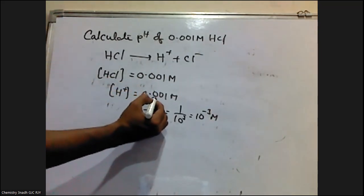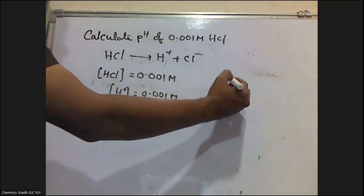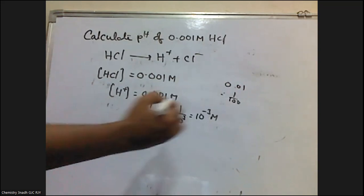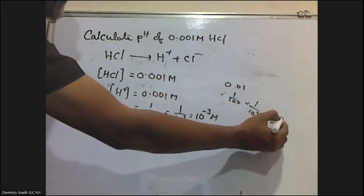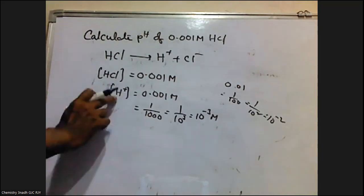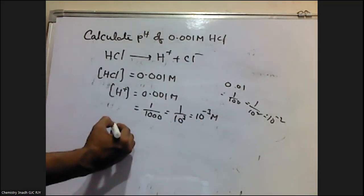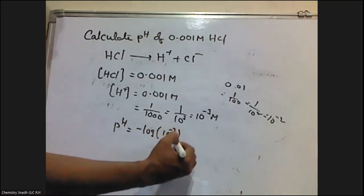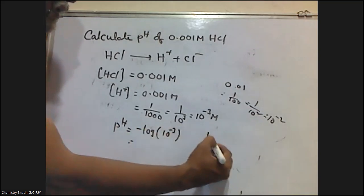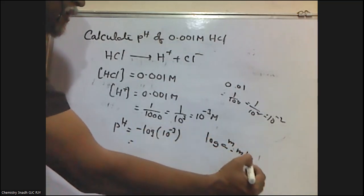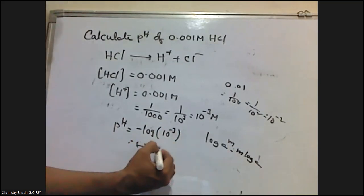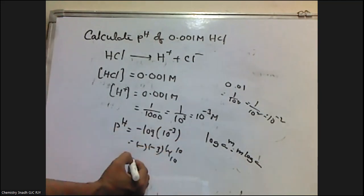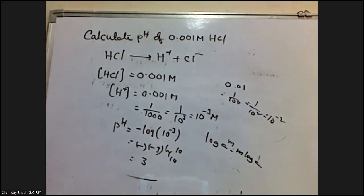After the decimal, 3 digits are there, so I write it as 10 to the power of minus 3. For example, if it is 0.01, after the decimal there are 2 places, so that is 1 by 100, which is 1 by 10² and 10 to the power of minus 2. Now, pH is equal to minus log of 10 to the power of minus 3. We know that log A^M equals M log A, so it becomes minus into minus 3 into log 10 base 10. Since log base 10 of 10 is 1, pH is equal to 3.